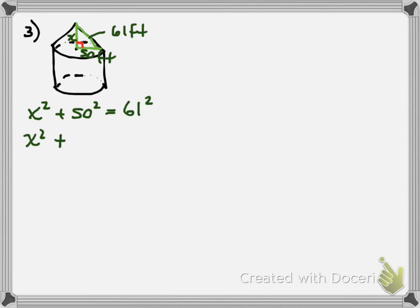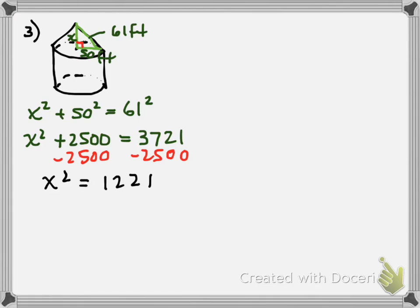We have X squared plus 2,500. Look at your chart. What's 61 squared? So now you're looking in the middle column. 3,721. 3,721. Okay. See, the chart can be very handy. We're going to go ahead and subtract 2,500 from both sides. And we get X squared equals, let's see, 1,221.